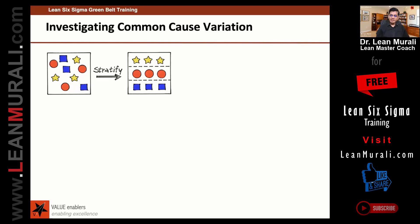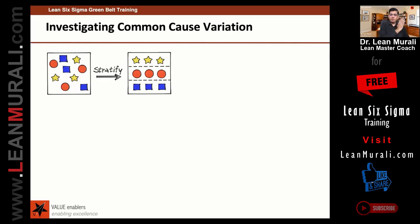Very difficult, right? So that is why in investigation, we have to make sure that we stratify. We say: shift one alone, we will take separately and keep it; shift two alone, we take and keep it separately; and shift three alone, we take and keep it separately. So the first step in investigating common causes is stratification.